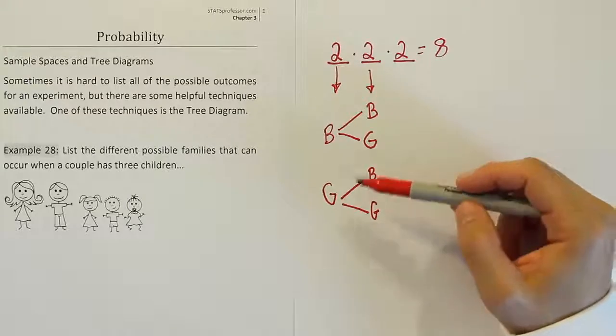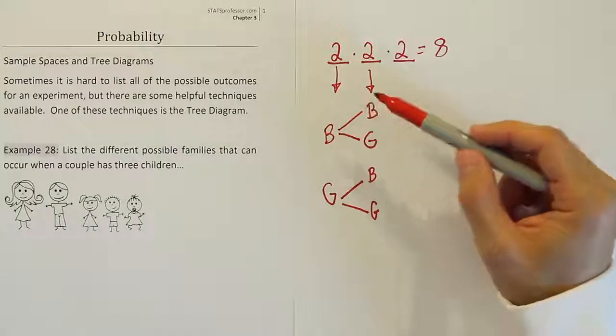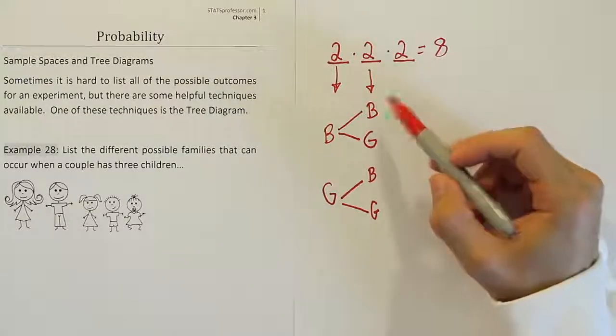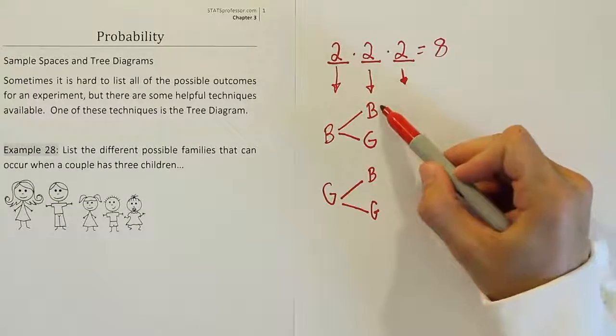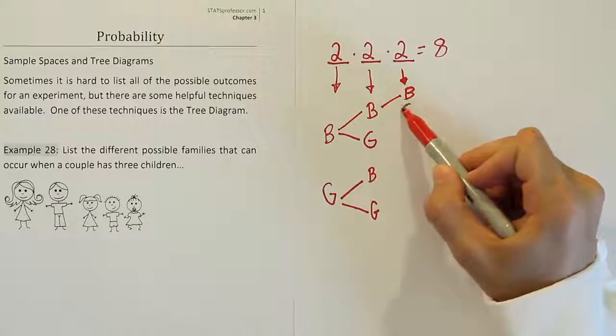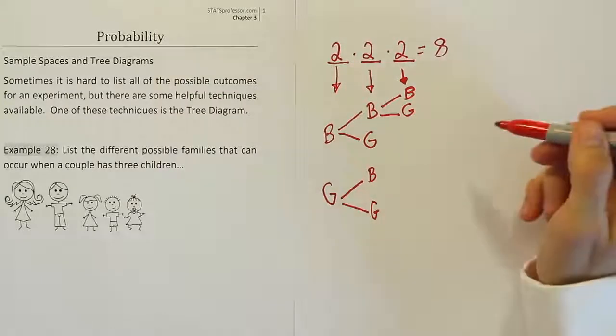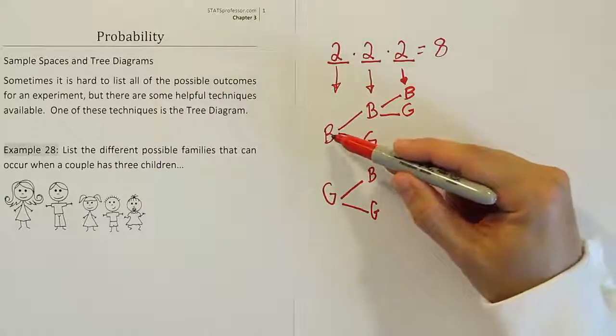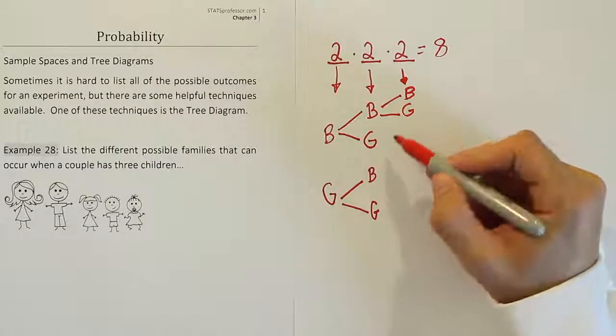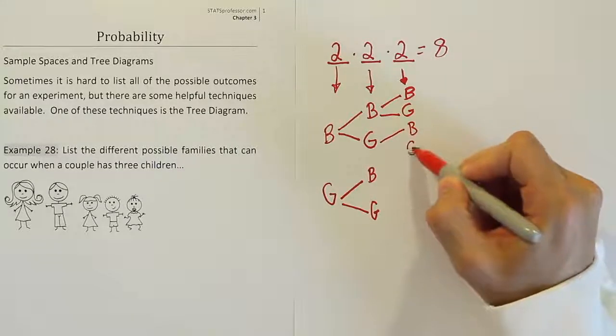Now, from here, let's think about it. If the first birth was a boy and the second birth was a boy, then the third birth could be, again, boy or girl. But, if the first was a boy and the second was a girl, again, the third birth could still be boy or girl.